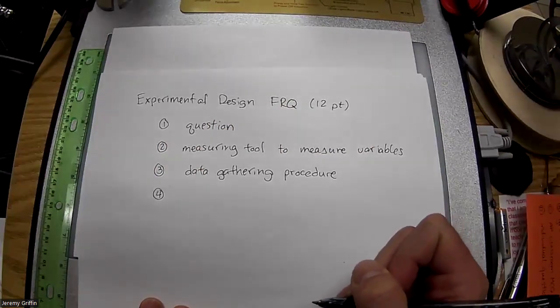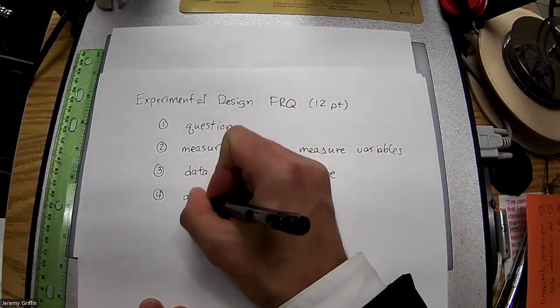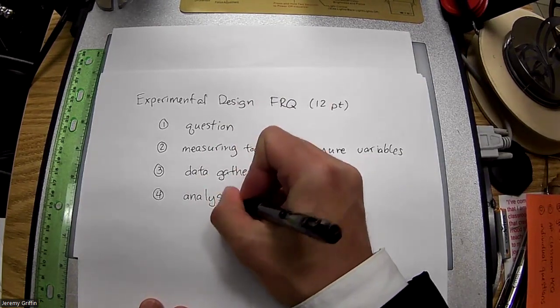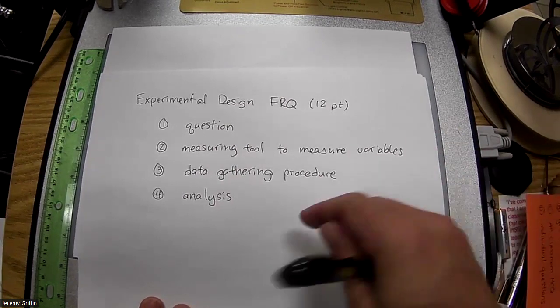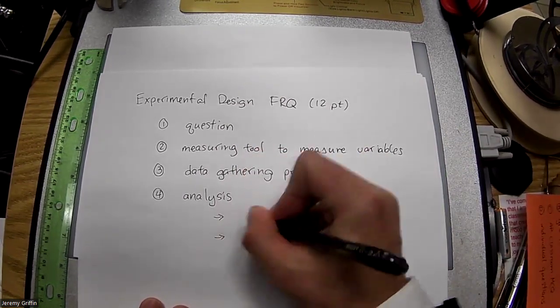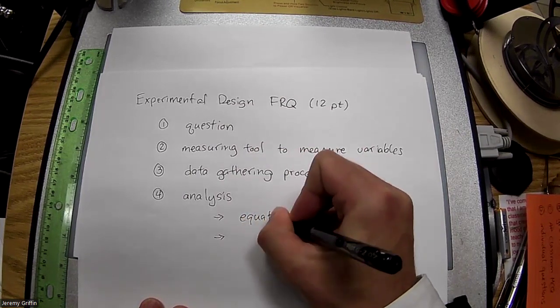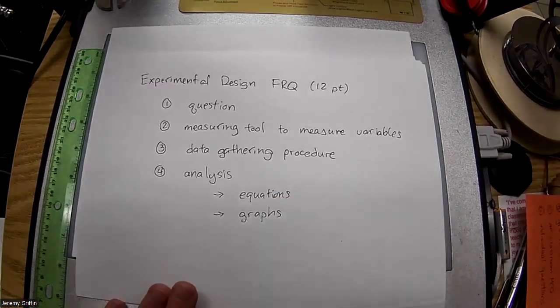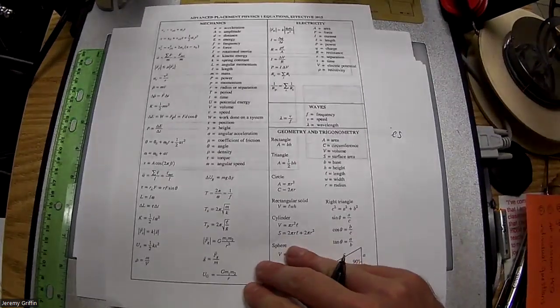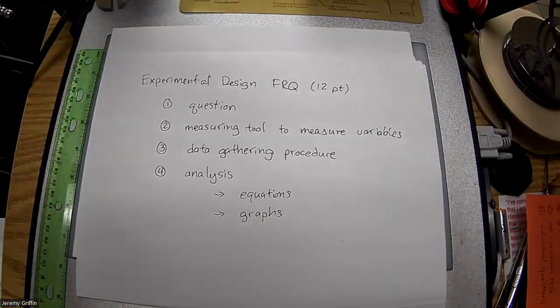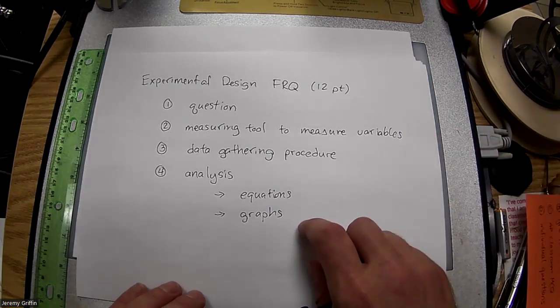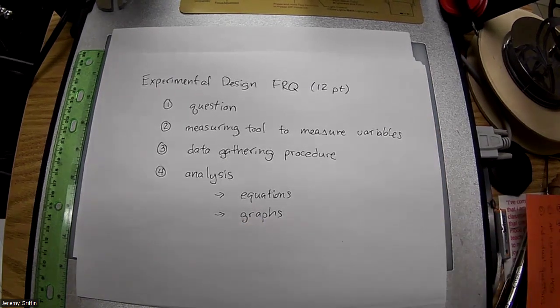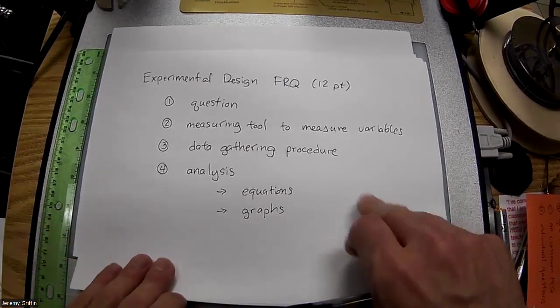Now step four is going to be what? Analysis. This could be part C and this could be part D or something. Some kind of analysis. So what are you going to do with that data? It's usually either equations or graphs. Either you're going to break out equations - you can refer to this page - or they're going to want you to analyze some aspect of a graph. They might say how do you linearize something. We've done so much linearization, especially the last few weeks. So how can you take this data and linearize it? Just look at anything we've done for the last few weeks.